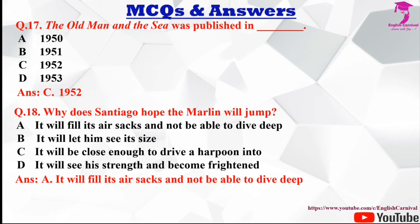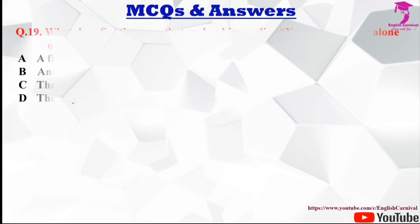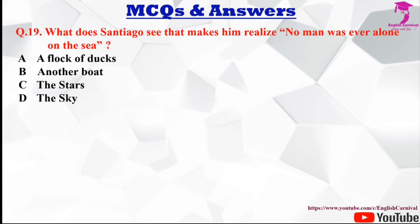Question number nineteen: What does Santiago see that makes him realize no man was ever alone on the sea? Options are A a flock of ducks, B another boat, C the stars, and D the sky. The correct answer is A, a flock of ducks.